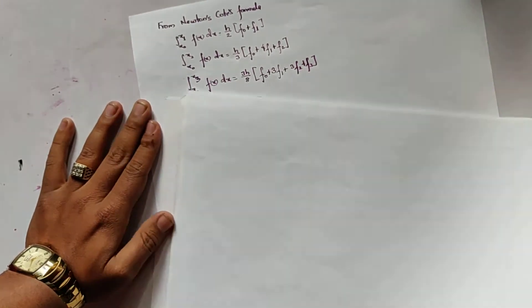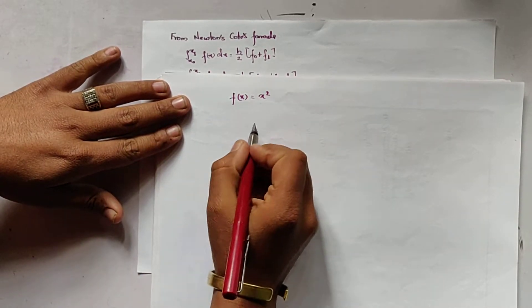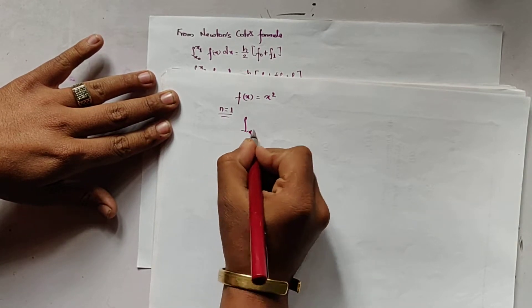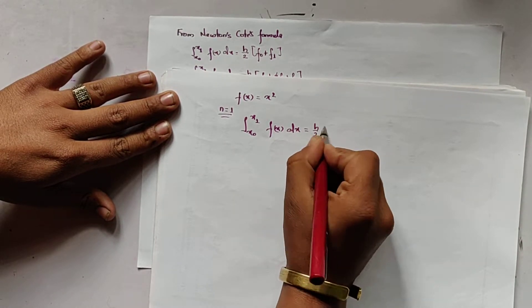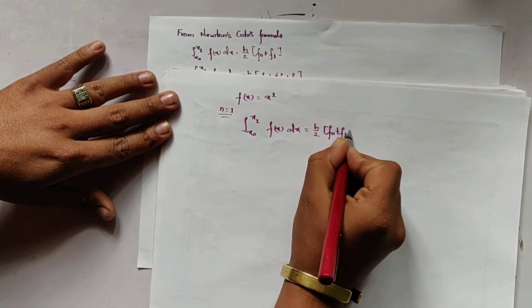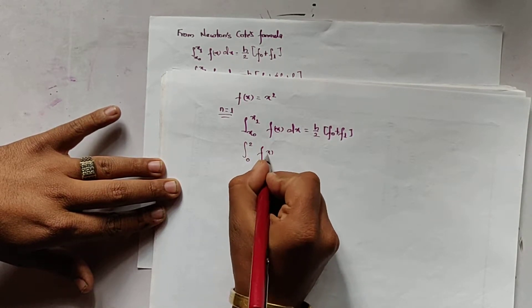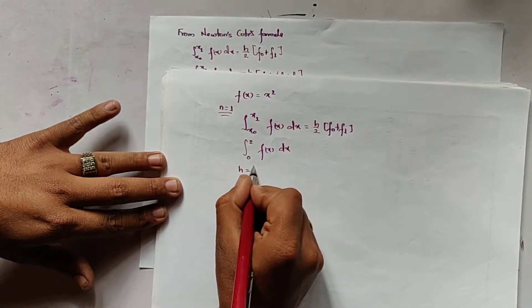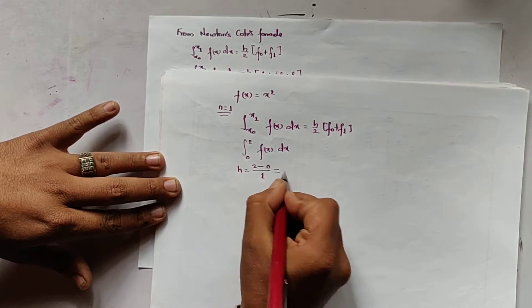Let us consider a function f(x) = x². When n equals 1 we use the formula: integral from x₀ to x₁ of f(x) dx = h/2 * (f₀ + f₁). Let the range be from 0 to 2. Since n equals 1, h equals (x₁ - x₀)/1 = 2.